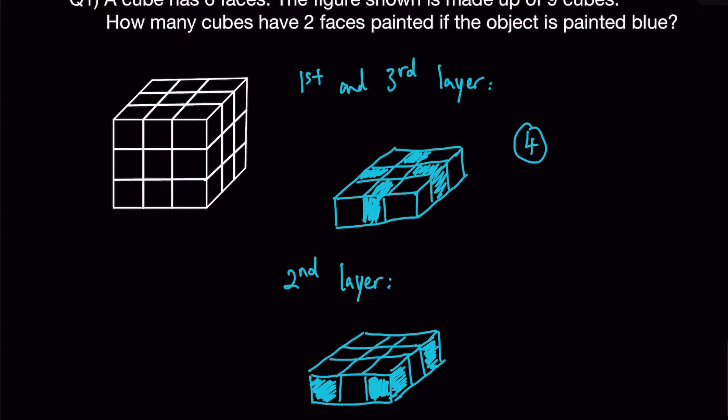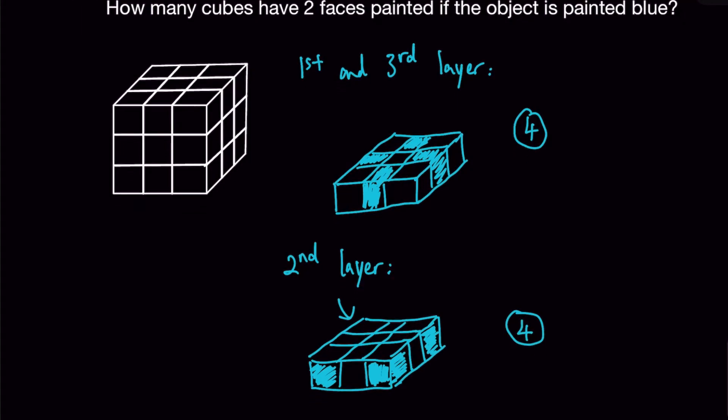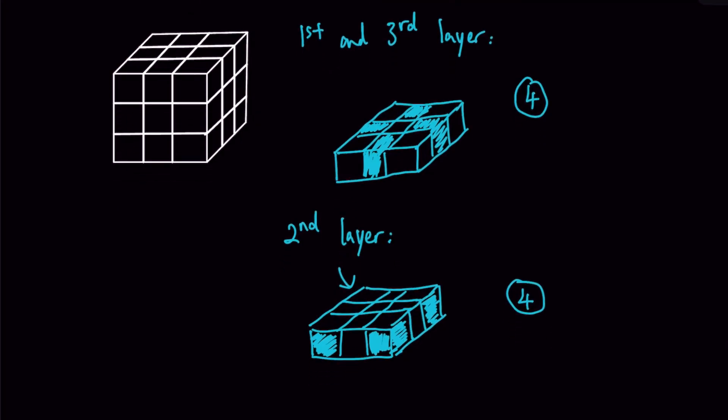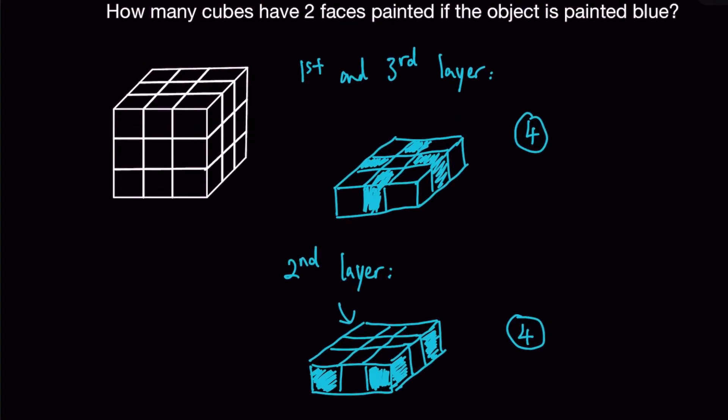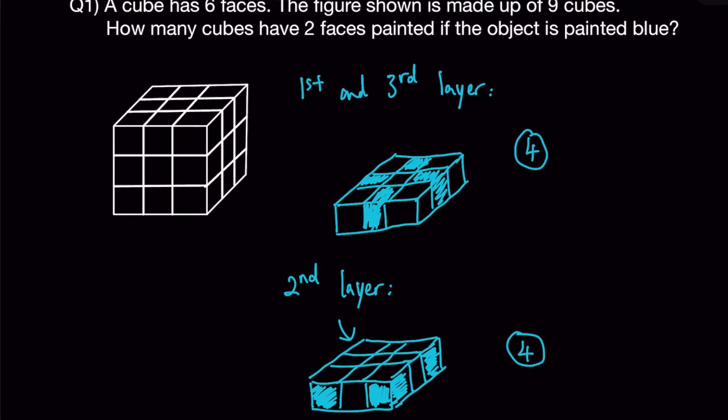Don't miss out the final one which is at the back. Similarly, there will also be four cubes with two faces painted blue. To find the total number of cubes, all you have to do is 4 times 3 equals 12. And there you have your answer for question 1.